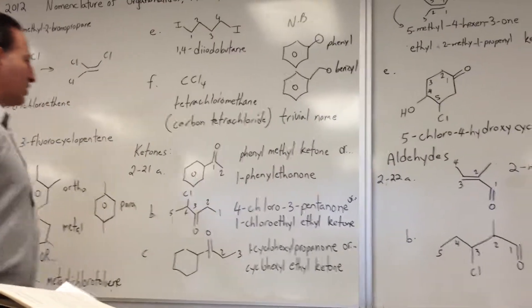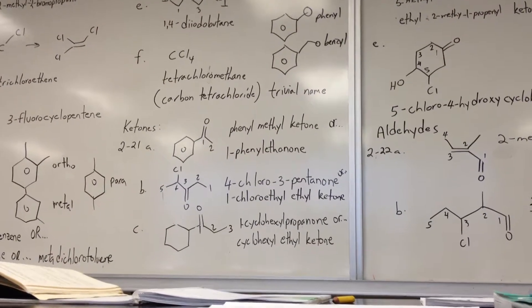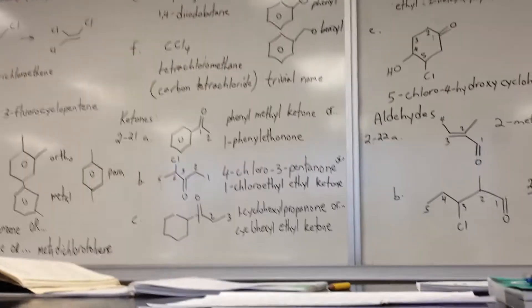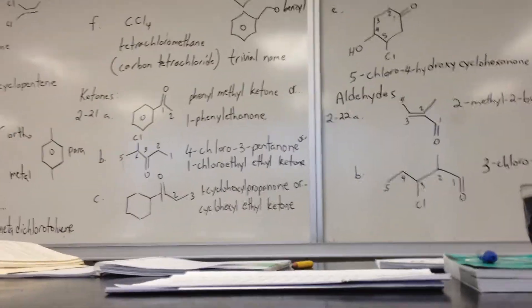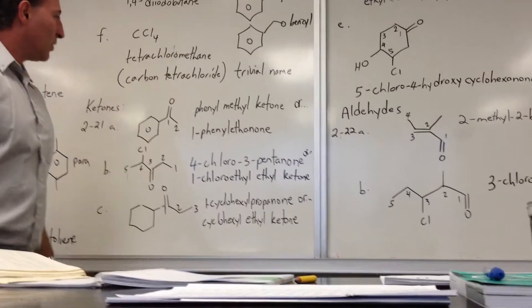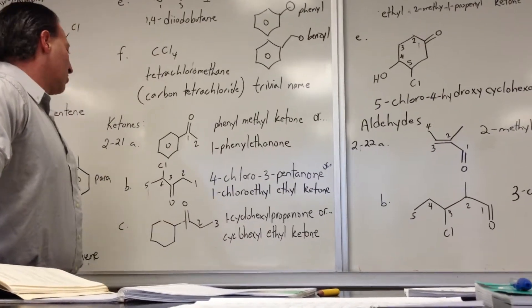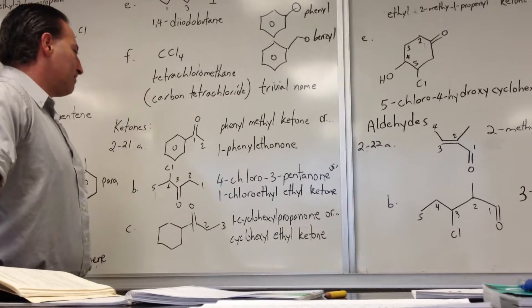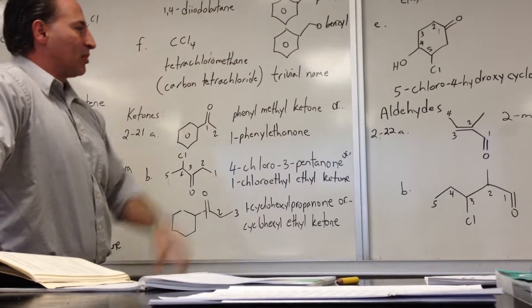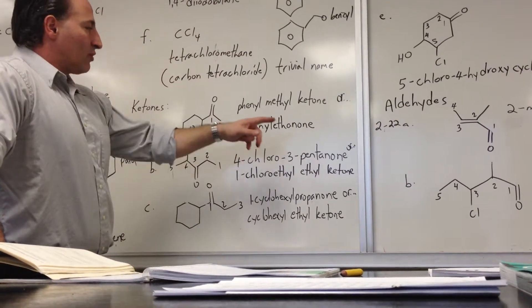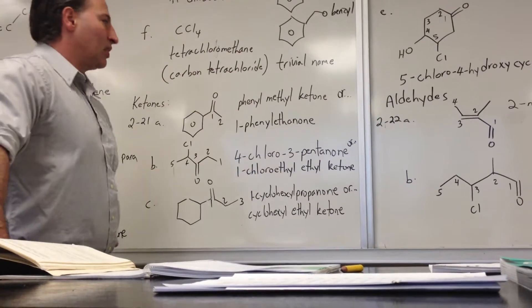The next section deals with ketones. With ketones, you put an one ending on the end of the molecule name. There are two ways of naming ketones. You could say alkyl-alkyl ketone, you write three separate words, or you look for the longest continuous chain, name the substituents, and put an one ending on it.